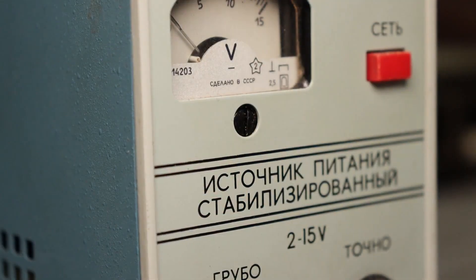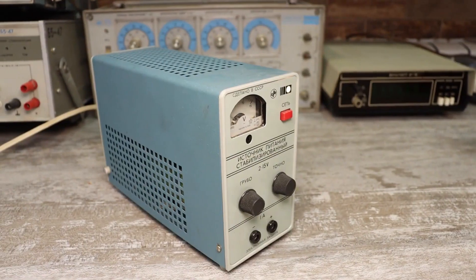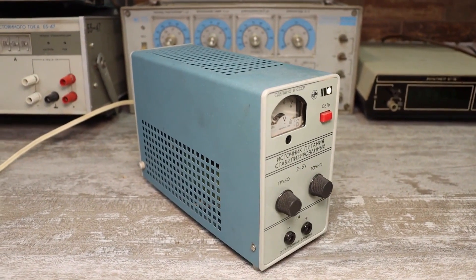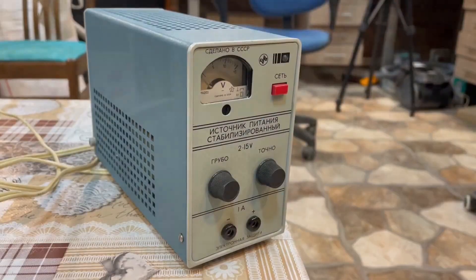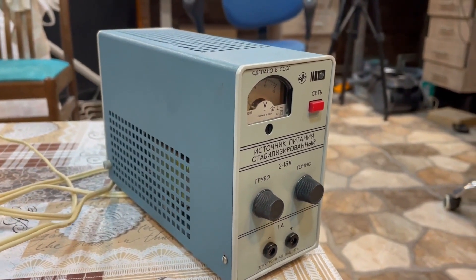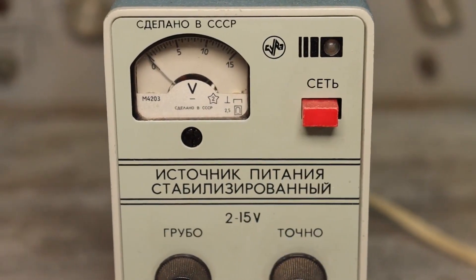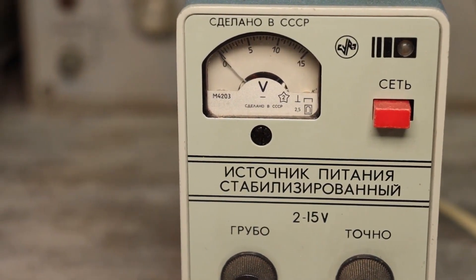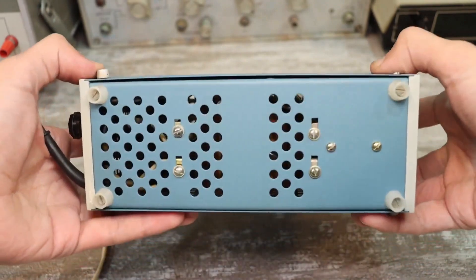The instability of the output voltage is no more than 1 percent with a deviation of the mains 220 by plus minus 10 percent. The output voltage ripple is no more than 20 millivolts. The power consumed from the mains is no more than 55 volt amperes. The weight of the source is about 2 kilograms.